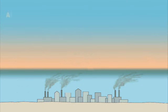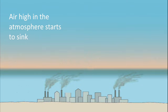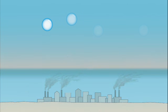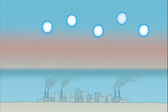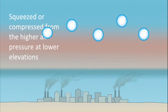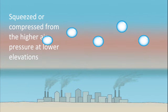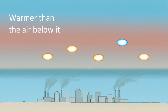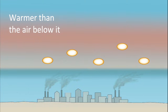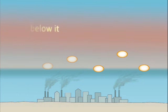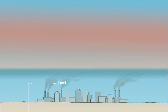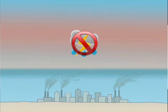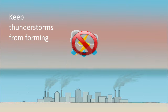Sometimes air high in the atmosphere starts to sink. As it sinks, it begins to warm due to the air being squeezed or compressed from the higher air pressure at lower elevations. The sinking air can warm to the point it is warmer than the air below it, even hundreds or thousands of feet above the Earth's surface. Called an upper air inversion, it acts as a barrier to keep thunderstorms from forming.